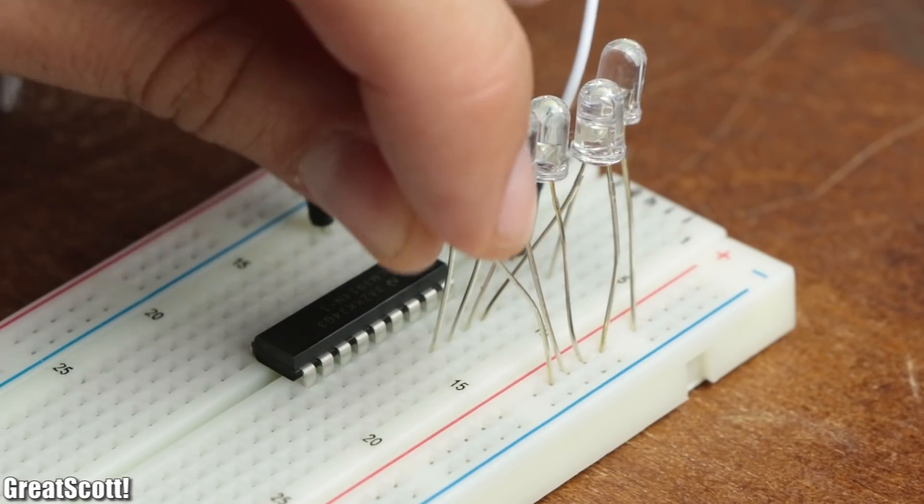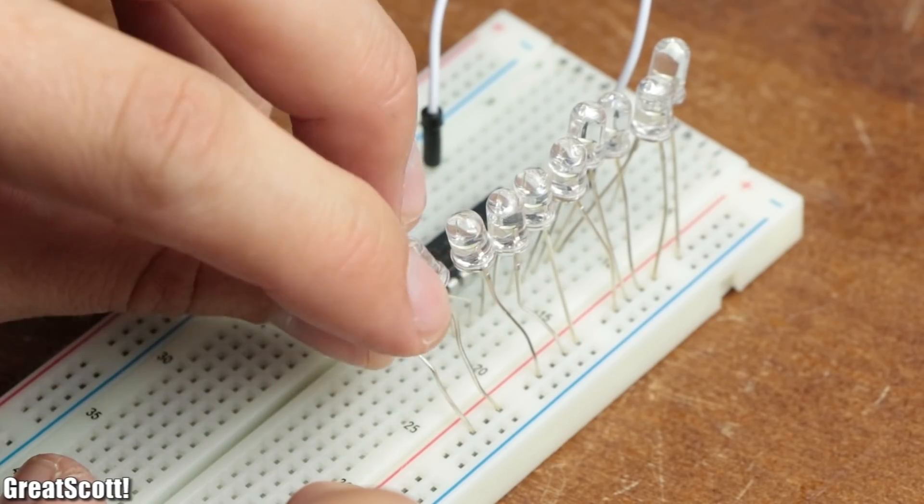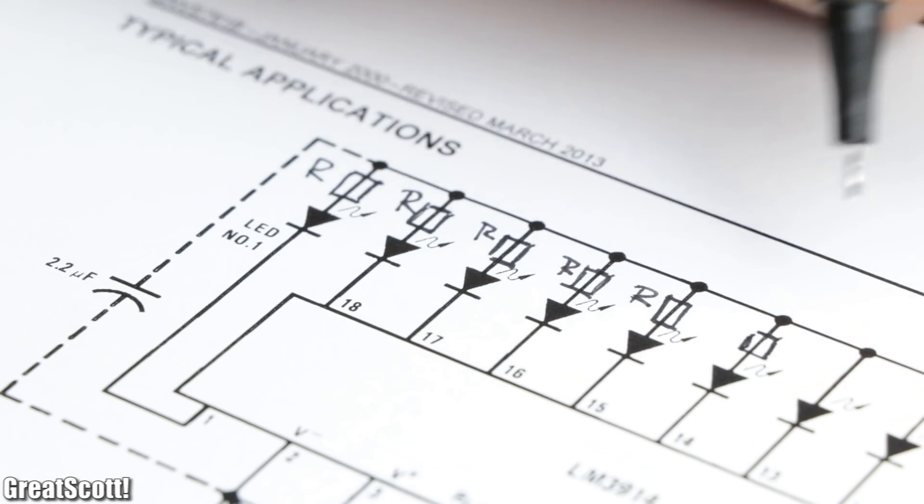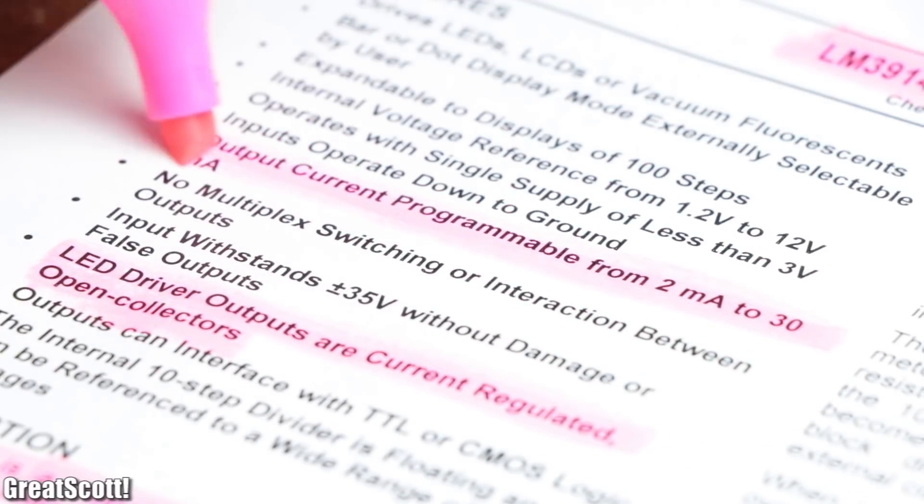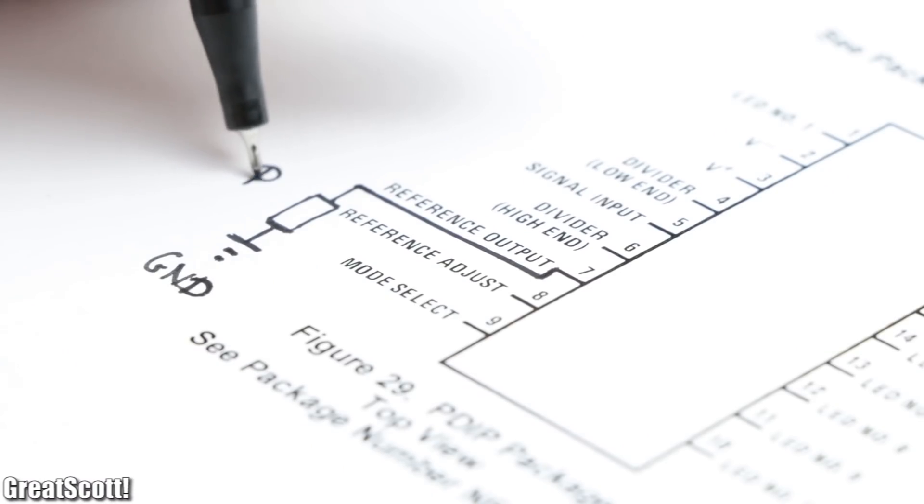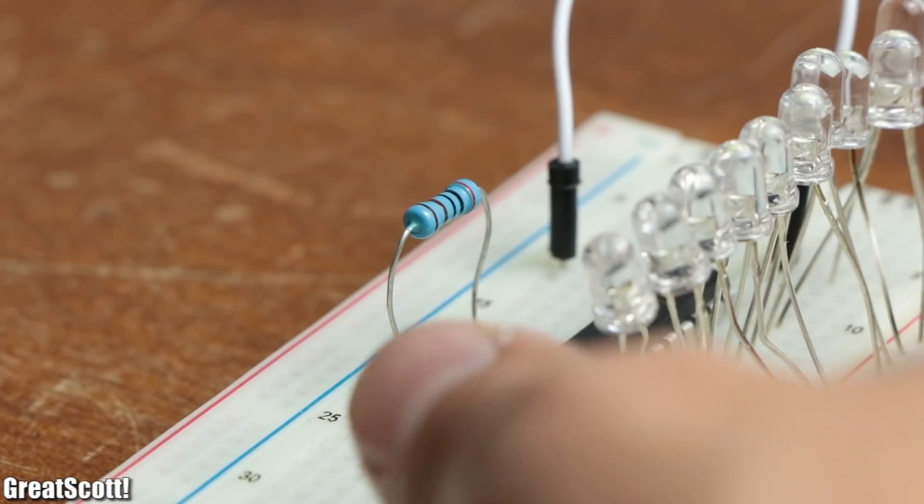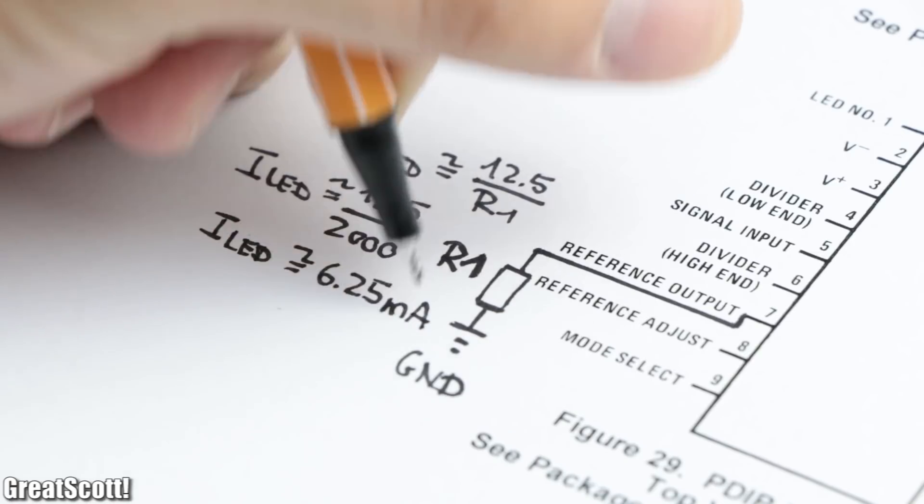The 10 LEDs need to get connected with their cathodes to the pins 1, 10, 11, 12, up to 18. And no, they do not require a current limiting resistor since the IC features constant current outputs. This current can be set by connecting a resistor between the REF OUT pin and ground. I went with a 2 kilohm resistor, which gives us a current of around 6.25 milliamps per LED.